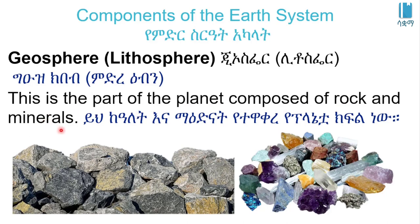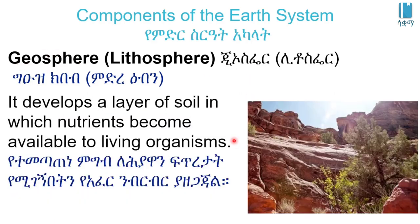The sphere that makes up a big part of the planet — the lithosphere — is the surface of the planet. It develops a layer of soil in which nutrients become available to living organisms.